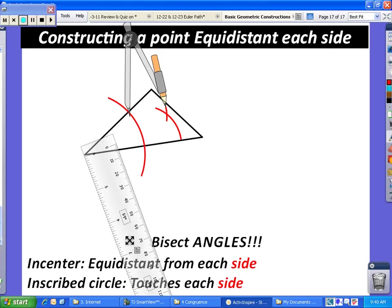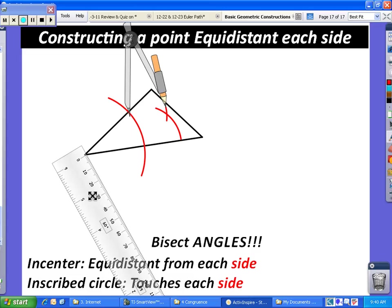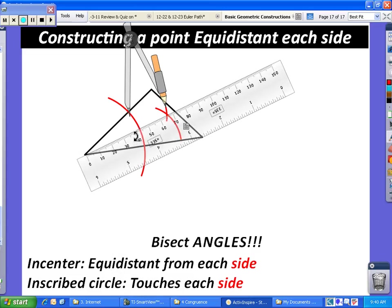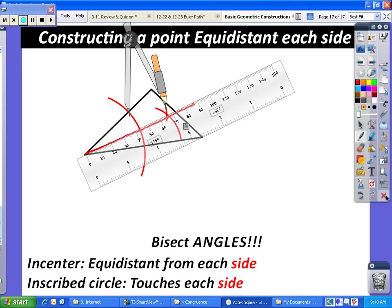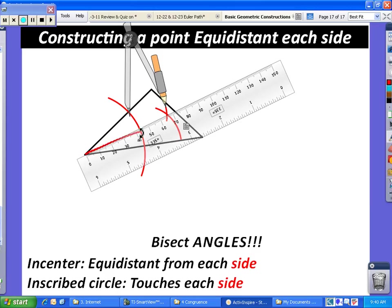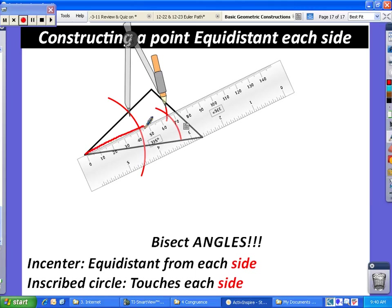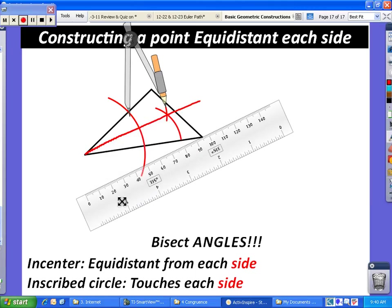And now using your ruler, you want to connect the vertex with where those two arcs intersected. So go ahead and do that. And my line went off. Let me try that one more time, using my ruler here. Oh, this doesn't seem to be working for me right now. One more time. Okay, well that looks pretty good.